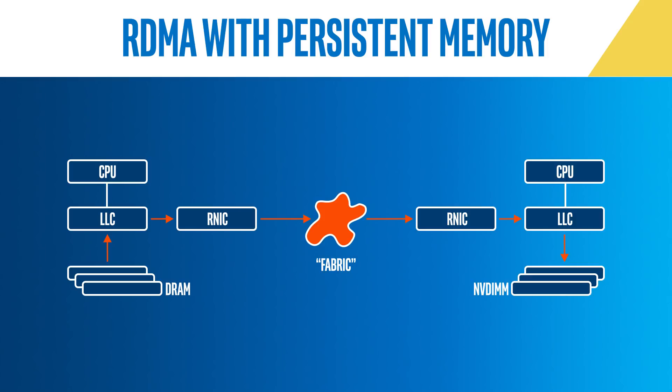PMOF adheres to the Storage Networking Industry Association, or SNIA, programming model, which requires that any CPU caches be flushed before the persistence of the data can be guaranteed. After data is written into the persistent memory using RDMA, the software will need to flush the node's CPU caches before the software can assume the data to be persistent. Alternatively, if the system can bypass CPU caches when moving the data, CPU flushes are no longer required.